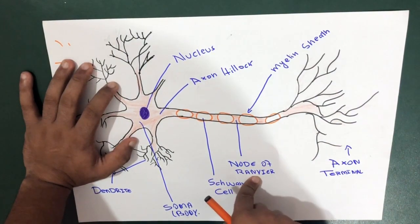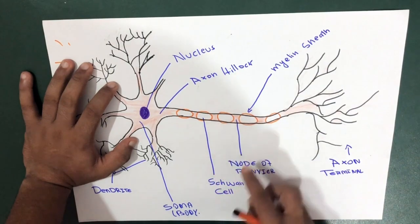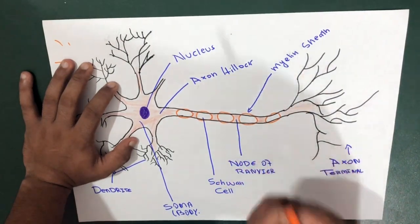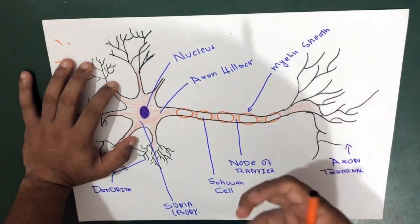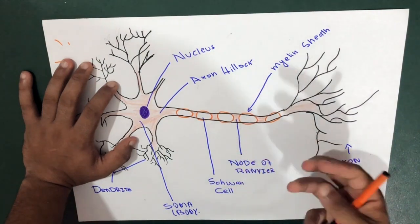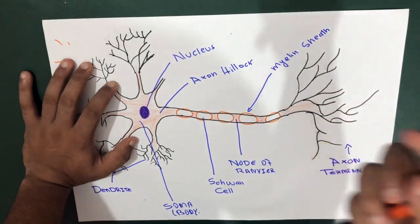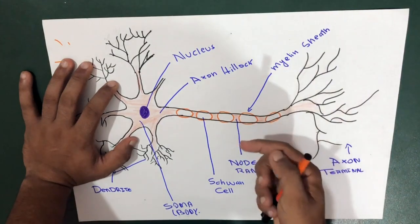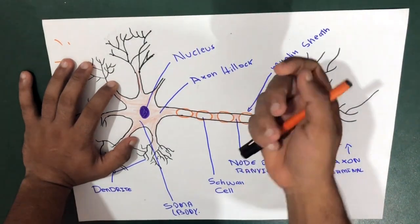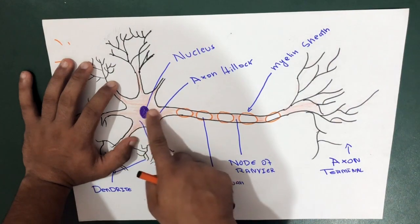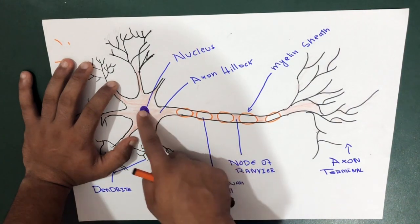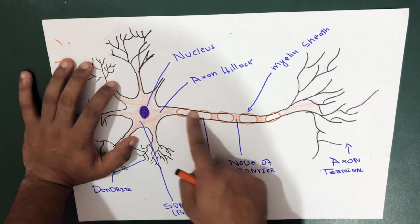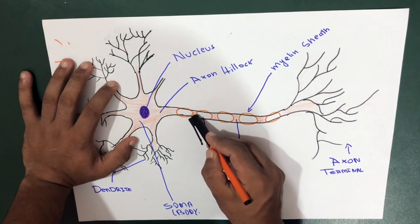the node of Ranvier. It's actually a space between the Schwann cells, and there is real importance to this space. This area is called the node of Ranvier, but we're not going to discuss it in detail here. I'm just telling you a little bit - the signals sometimes, what happens